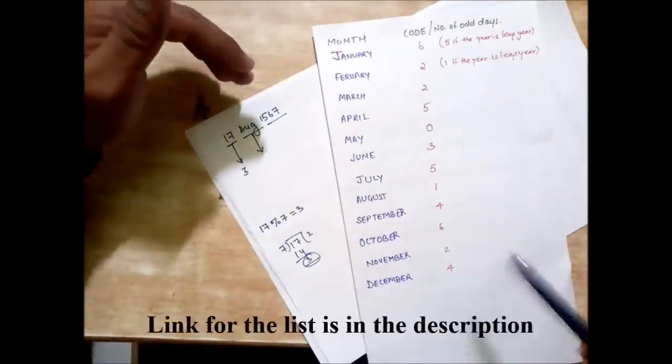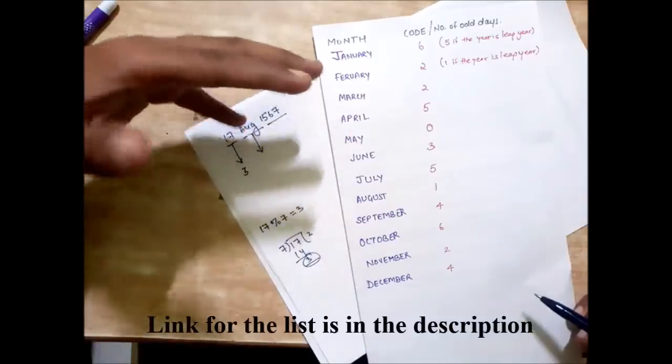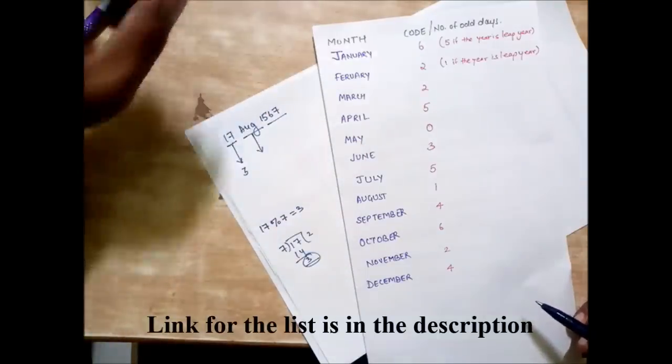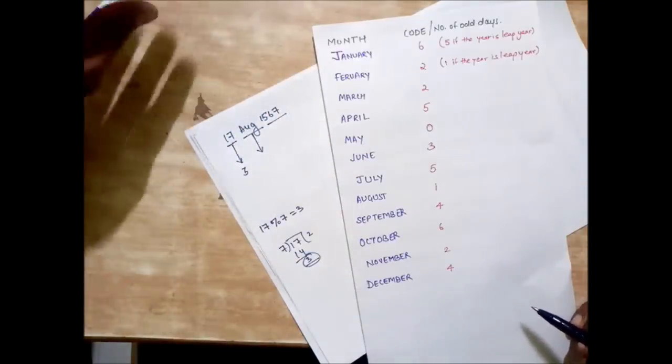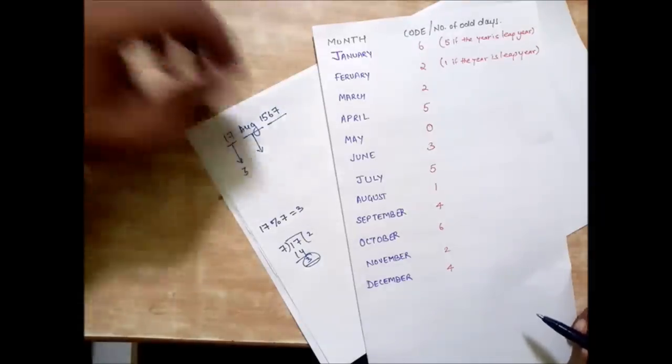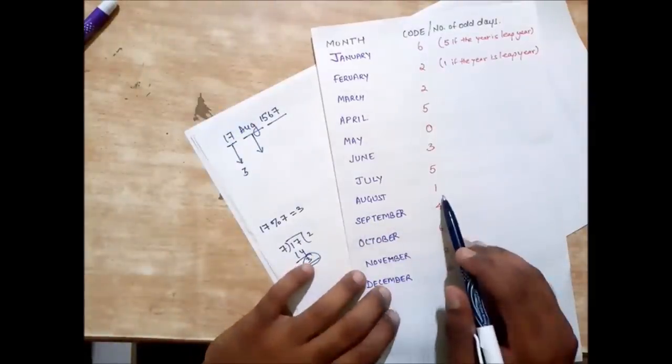You can see that every month has a number of odd days already written. You can find this list in the description box and you need to learn them. You can calculate them, it's very easy but it will take time during your competition or examination, so it's better if you learn them because they are going to remain the same.